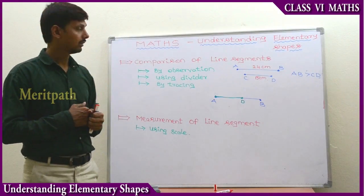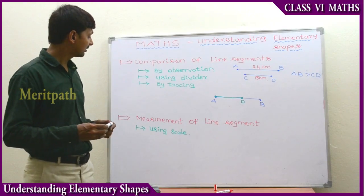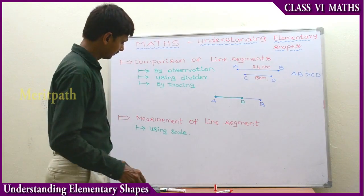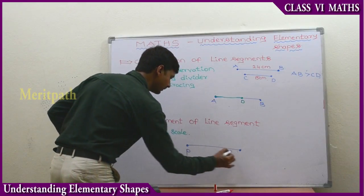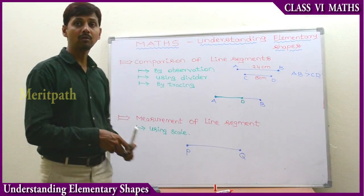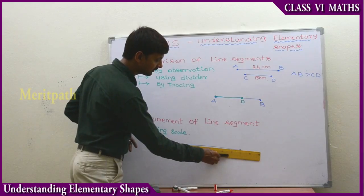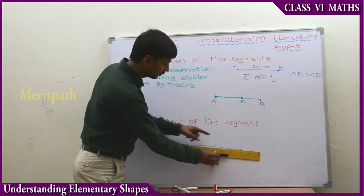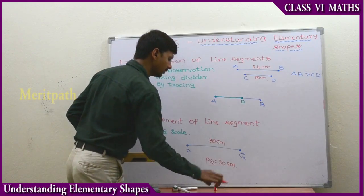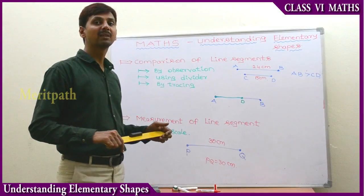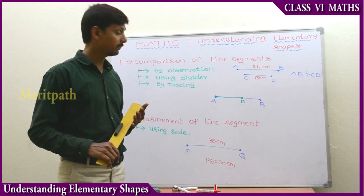So these are the three methods to compare line segments: by observation, using a divider, and by tracing. Now let's look at the measurement of a line segment using a scale. Let's take a line segment PQ. Using a scale, we measure it from 0 to 30, getting 30 centimeters. So the length of line segment PQ is equal to 30 centimeters.